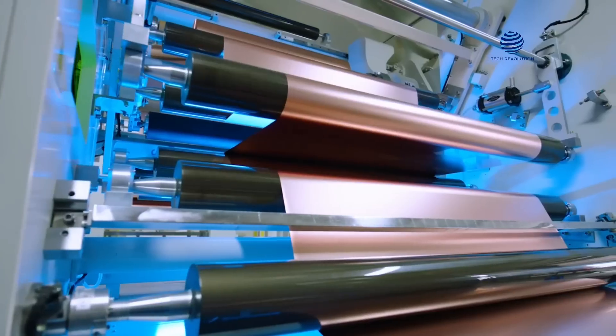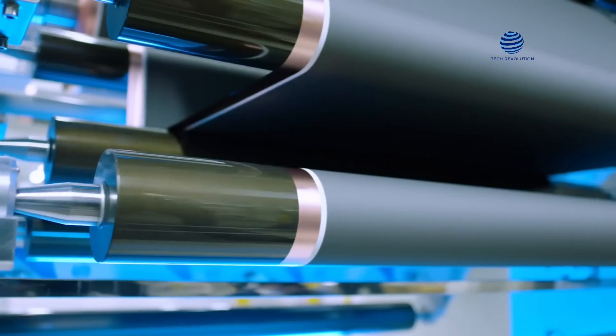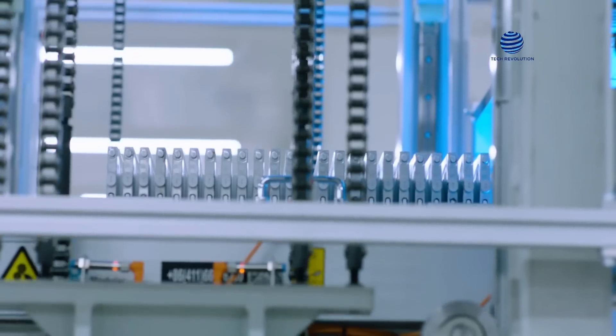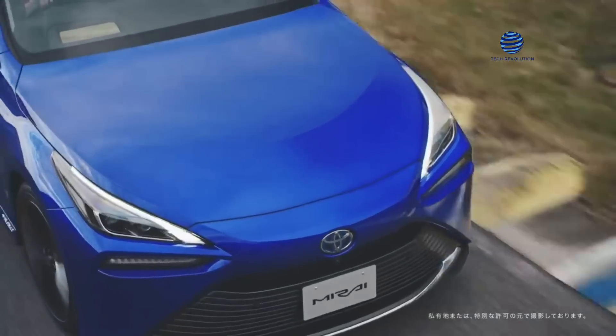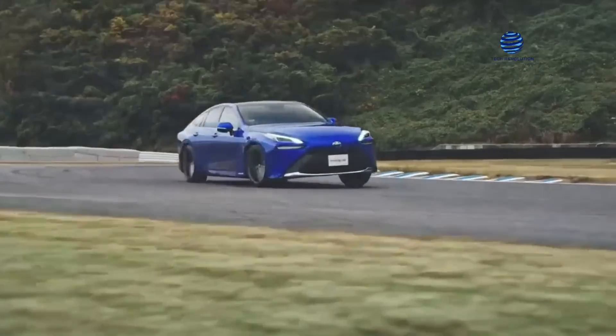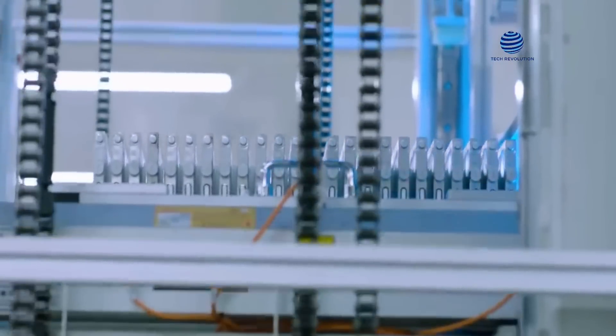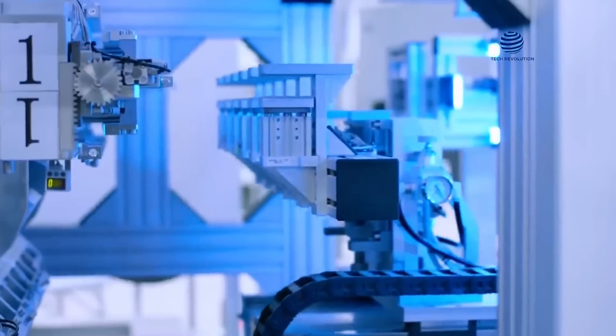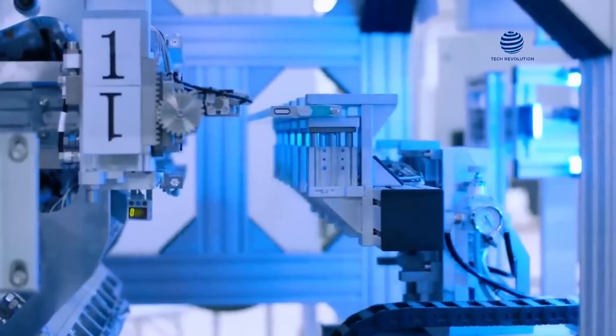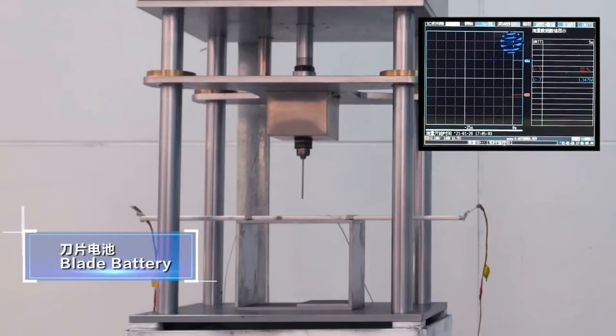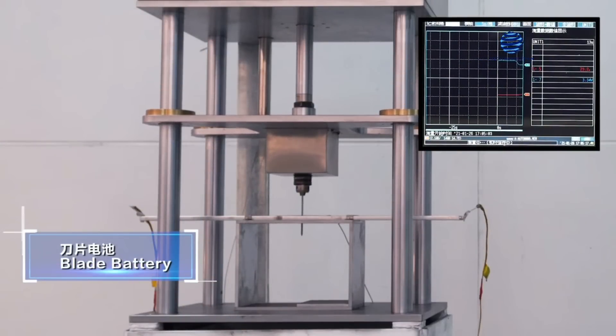Since 2020, BYD has been producing lithium-iron phosphate blade batteries for use in its own vehicles, as well as for sale to other automakers like Toyota. The blade-shaped battery is thinner and longer than traditional lithium-iron cells, allowing it to make better use of the battery pack's available space. Even if it's severely damaged, it's less likely to catch fire.